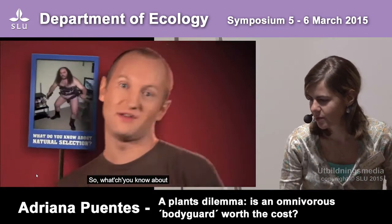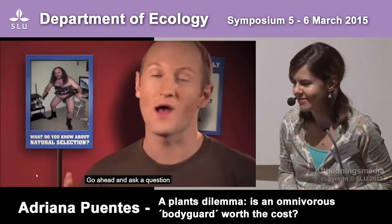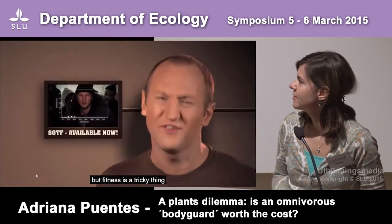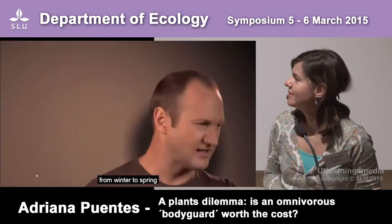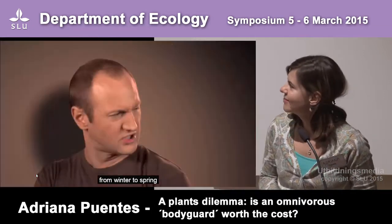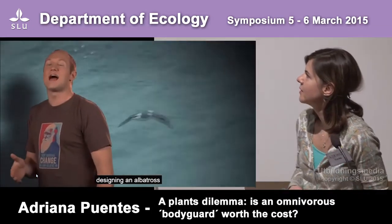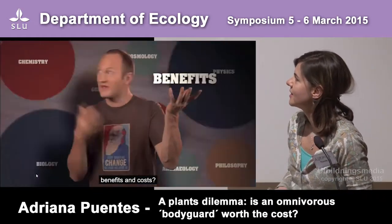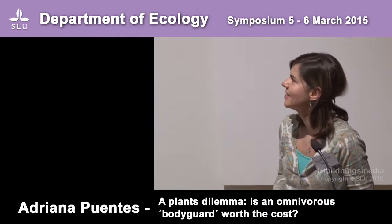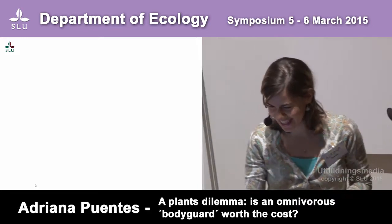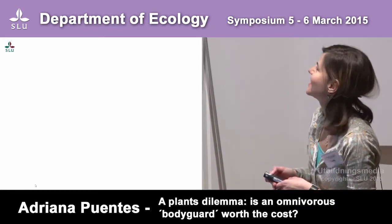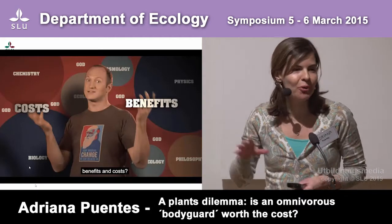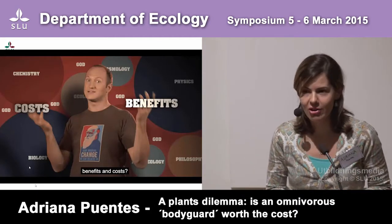"So what you know about natural selection? Go ahead and ask a question and see where the answer gets you. It's survival of the fitness, but fitness is a tricky thing — it changes from place to place, from winter to spring. So why would he bother designing an albatross when natural selection already does such an excellent job just by balancing benefits and costs?" What he meant is that it all boils down to benefits and costs.